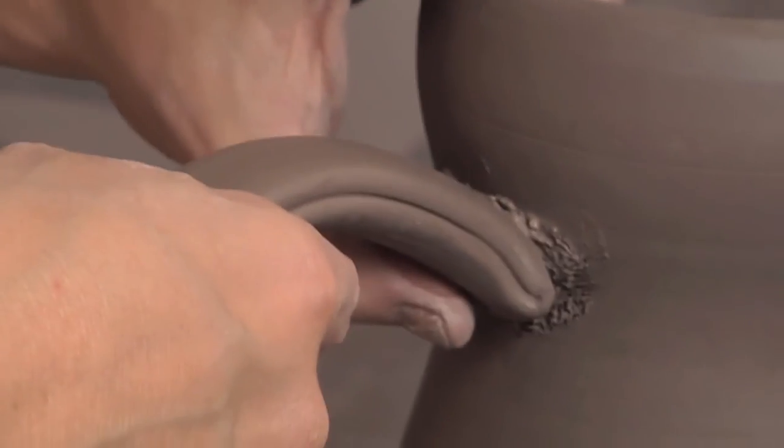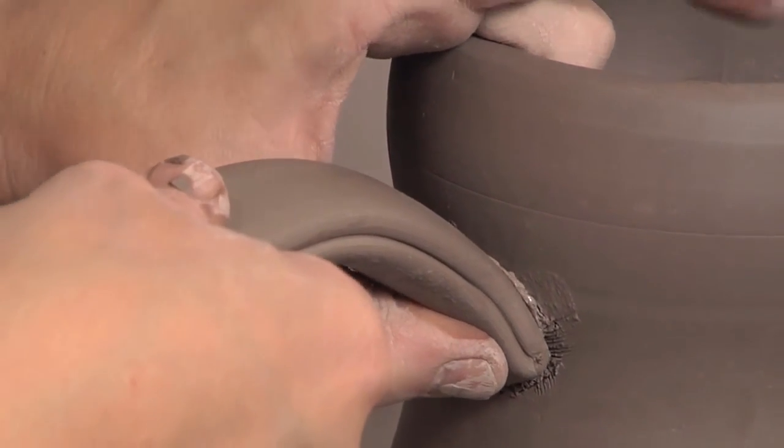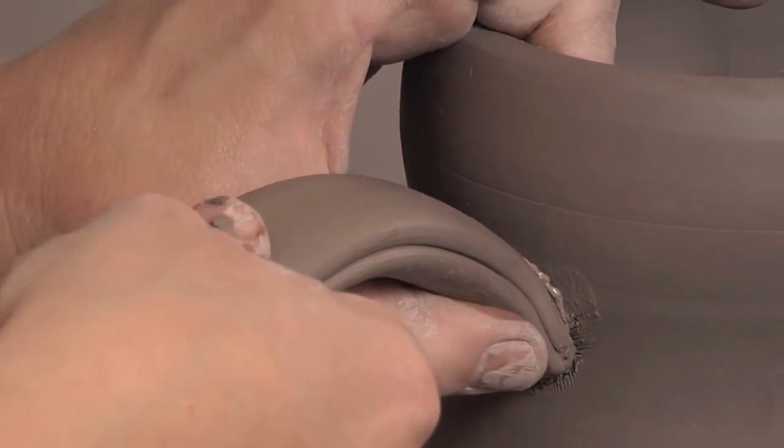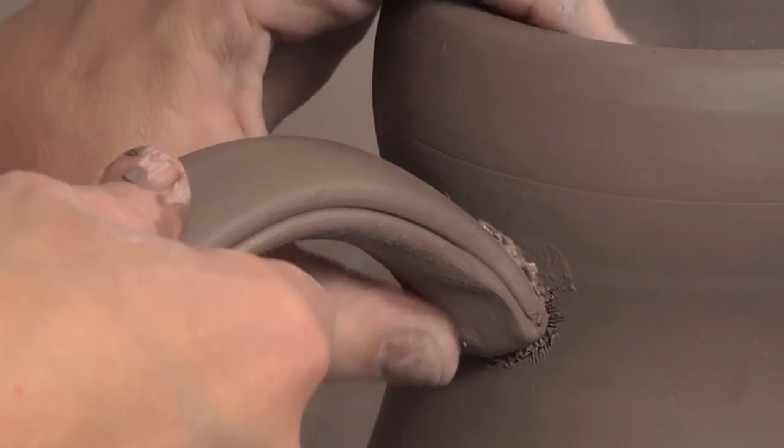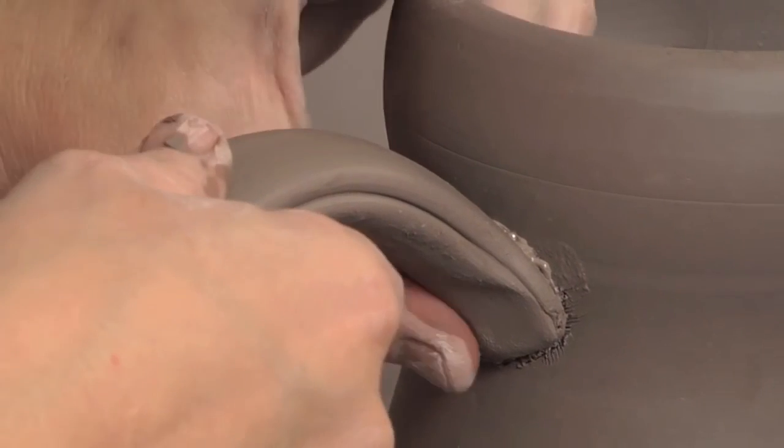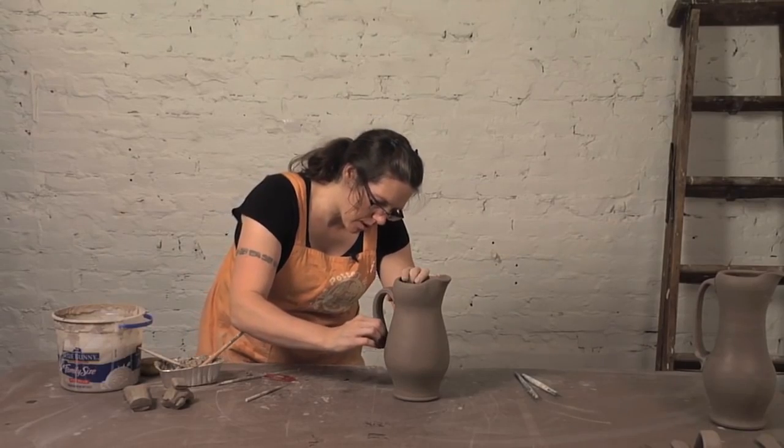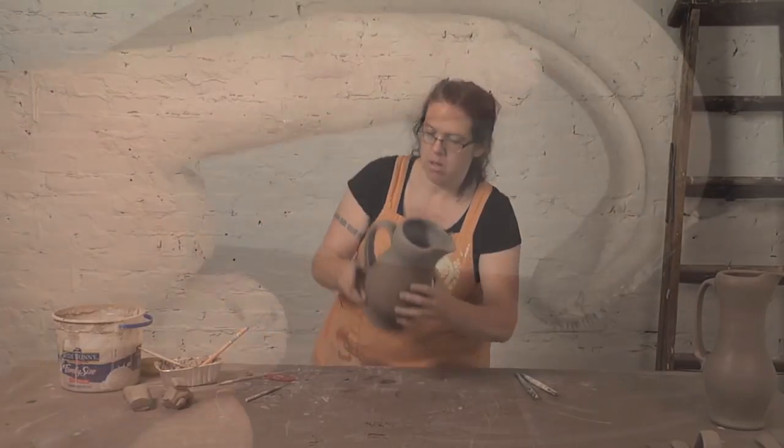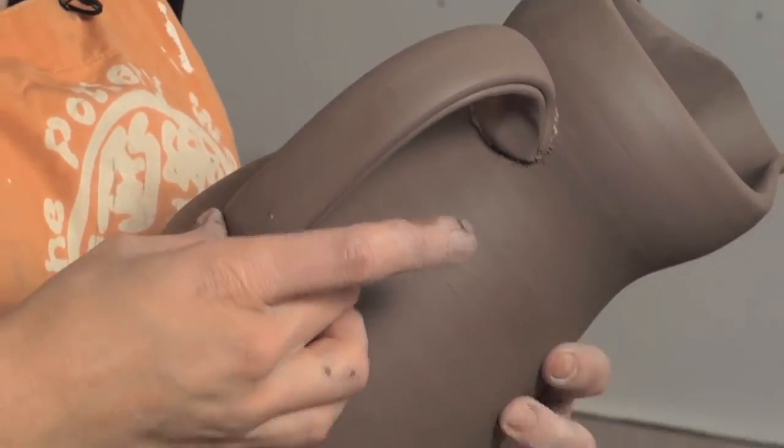I'm going to start with my upper attachment. I'm making sure that my handle is opposite my spout. I'm going to bring down the bottom part here.